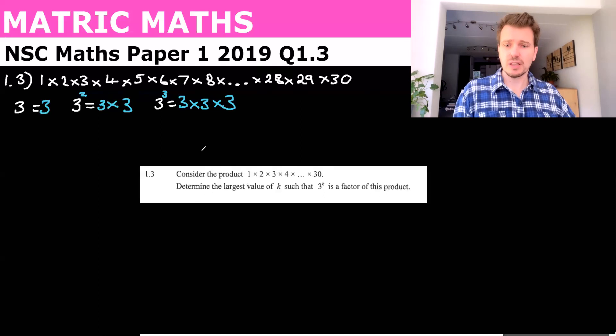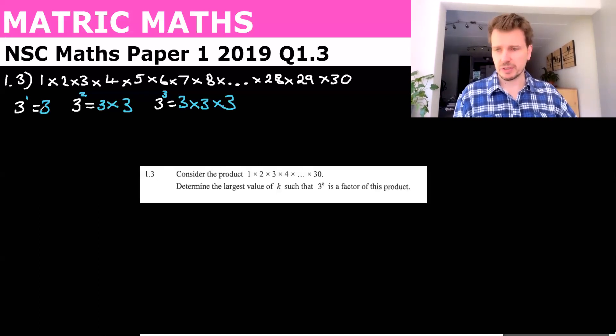So the second part says, determine the largest value of k, such that 3 to the k, is a factor of this product. So what does that mean? Well, I've also written that. Say we just had 3 and k was 1. So if k was 1, it would just be 3 to the 1, which is 3.